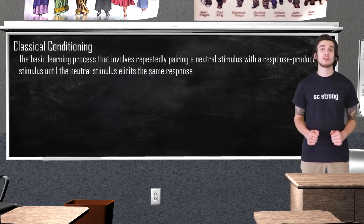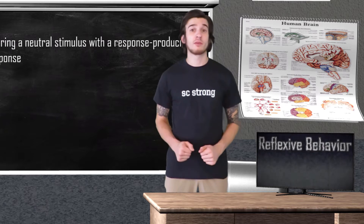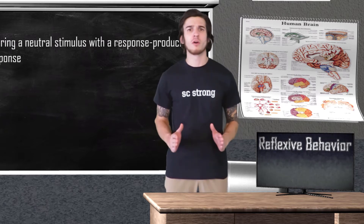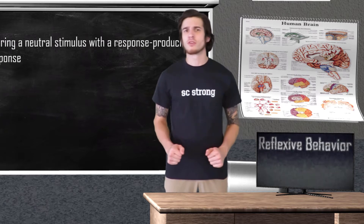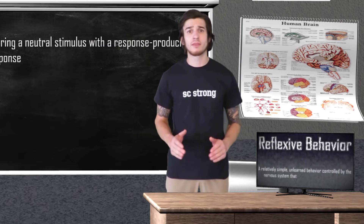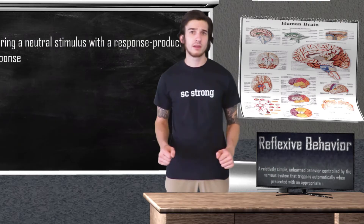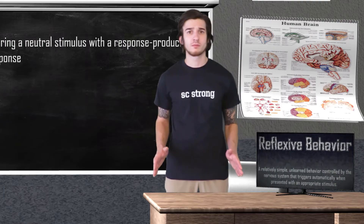We are going to see that classical conditioning will almost always involve some type of reflexive behavior. A reflexive behavior is going to be a relatively simple, unlearned behavior controlled by the nervous system that triggers automatically when presented with an appropriate stimulus.